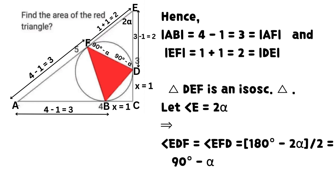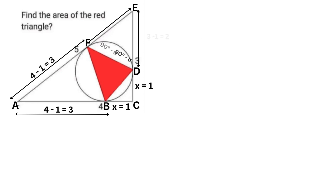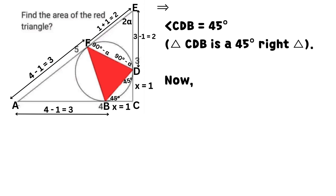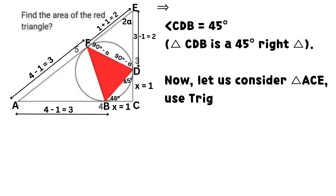Let angle E equal 2 times alpha. This implies that angle EDF equals angle EFD, which equals 90 degrees minus alpha. It implies that angle CDB equals 45 degrees.